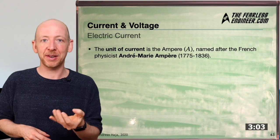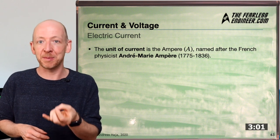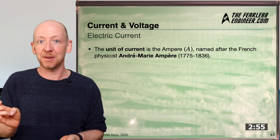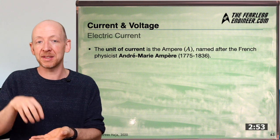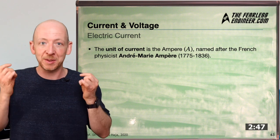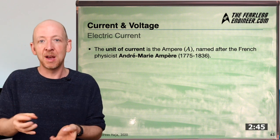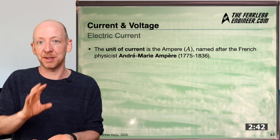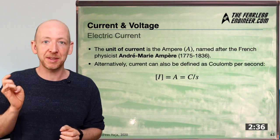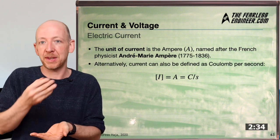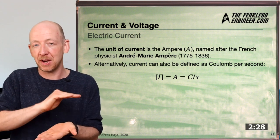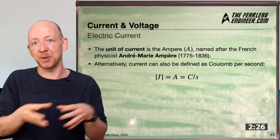Now that we have the definition for electric current, let's look at the unit we measure it in. As with many quantities in physics, the unit of current was named after a famous scientist — André-Marie Ampère, who lived in France in the 18th and 19th century. Ampère made many fundamental discoveries, especially in electrodynamics. Alternatively, we can also define current as Coulomb per second, which fits our definition of current as charge per time interval.